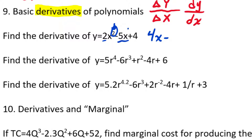For the -5x term, this is 5x to the first power. We multiply 5 by the exponent 1 to get 5, and then subtract 1 from the exponent — x to the first becomes x to the zero. Since anything to the zero power is 1, we just write minus 5. So the derivative so far is 4x - 5.